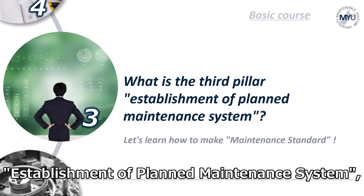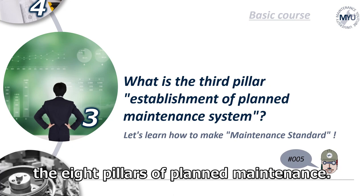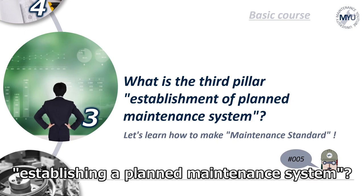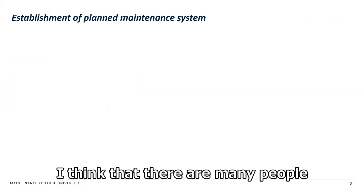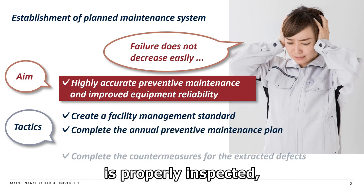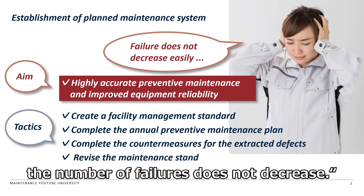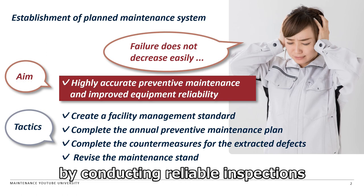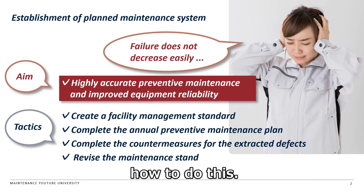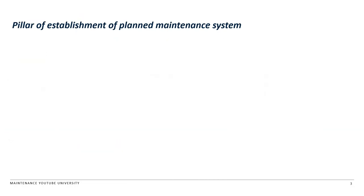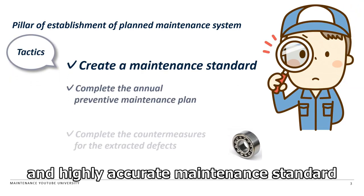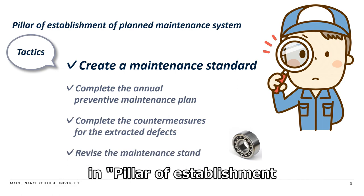Today's theme is Establishment of Planned Maintenance System, the 3rd pillar of the 8 pillars of planned maintenance. What kind of activity do maintenance members do in the pillar of Establishment of Planned Maintenance System? Many people are troubled that even though their equipment is properly inspected, the number of failures does not decrease. It is possible to prevent failures by conducting reliable inspections based on highly accurate maintenance standards, but many people are worried about how to do this. This time I will explain how to create the most important and highly accurate maintenance standard in the pillar of Establishment of Planned Maintenance System.